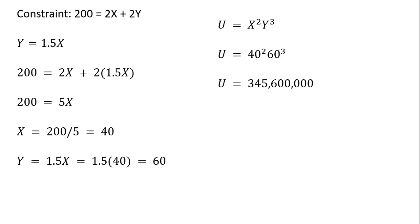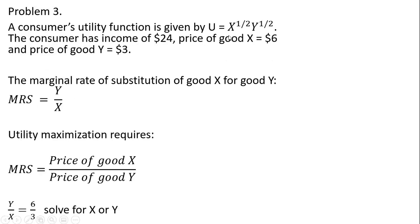Problem three uses a slightly different utility function with different exponents and different prices. Instead of giving marginal utilities, this problem provides the marginal rate of substitution of good x for good y, which equals y divided by x. The marginal rate of substitution is equivalent to the marginal utility of good x divided by the marginal utility of good y. Utility maximization now requires that the marginal rate of substitution equals the price of good x divided by the price of good y.